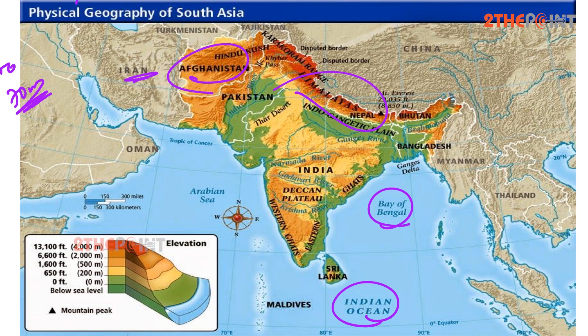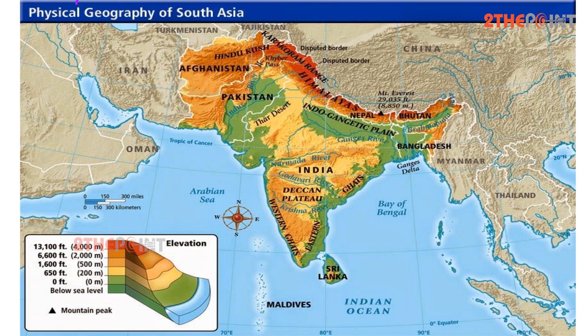Most of the South Asian landmass is formed from the land in the original Indian plate. The Himalayan mountains dominate the physical landscape in the northern region of South Asia. Mount Everest is the tallest peak in the world at 29,035 feet. Three key rivers that cross South Asia and originate from the Himalayas are the Indus River, the Ganges River, and the Brahmaputra River.